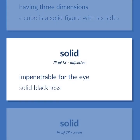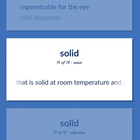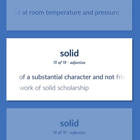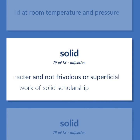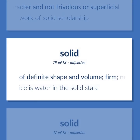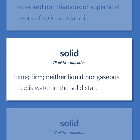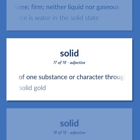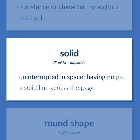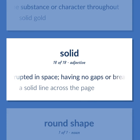Solid (continued): impenetrable for the eye — solid blackness. Matter that is solid at room temperature and pressure. Of a substantial character and not frivolous or superficial — work of solid scholarship. Of definite shape and volume, firm, neither liquid nor gaseous — ice is water in the solid state. Of one substance or character throughout — solid gold. Uninterrupted in space, having no gaps or breaks — a solid line across the page.